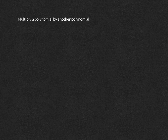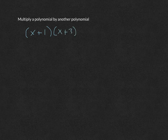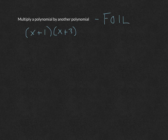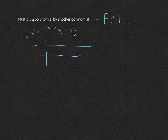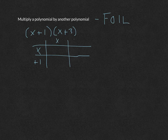The last type of polynomial multiplication is a polynomial by another polynomial. An example would be x plus 1 times x plus 3. I like to think of this using FOIL — First, Outer, Inner, Last. Another helpful method is setting this up into a chart. You can write x plus 1 along the top and x plus 3 along the side.